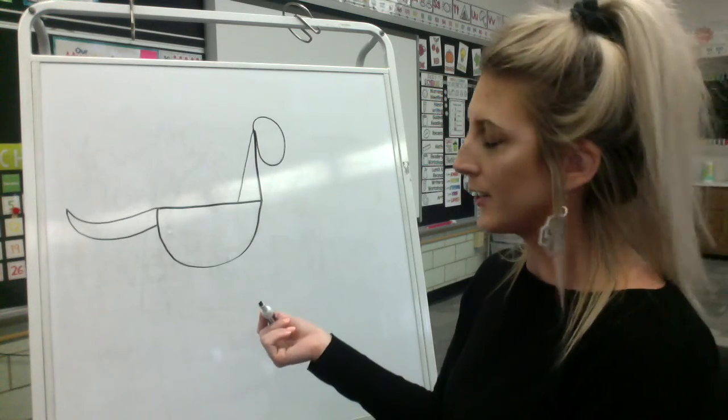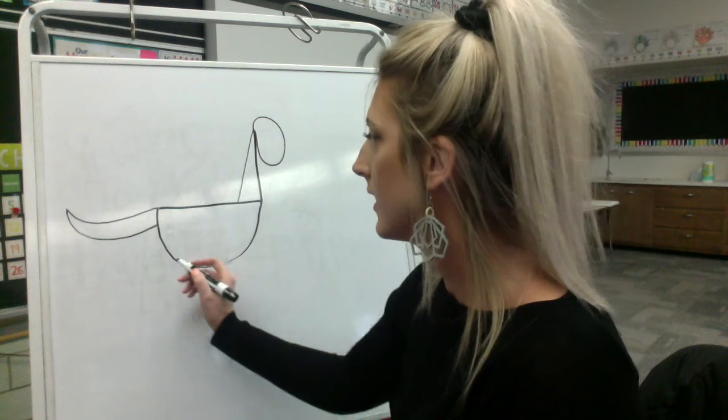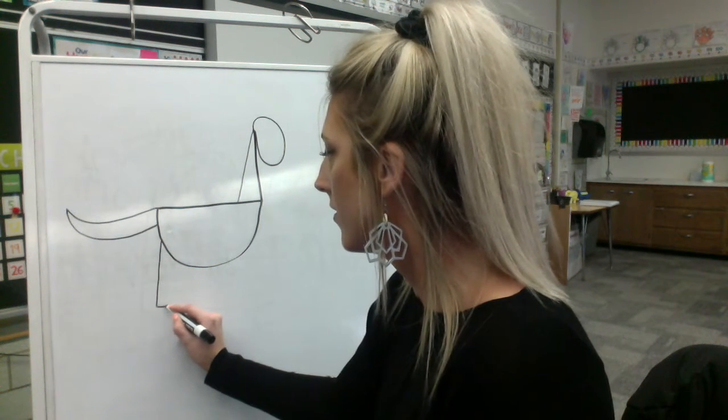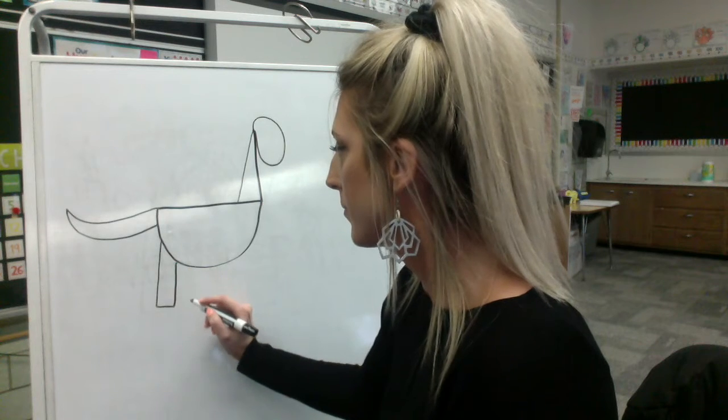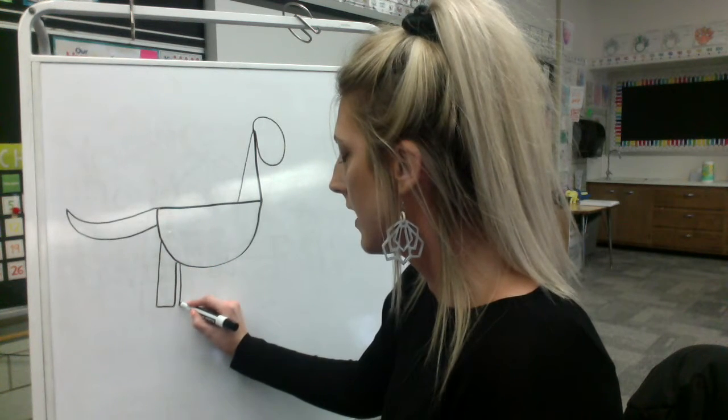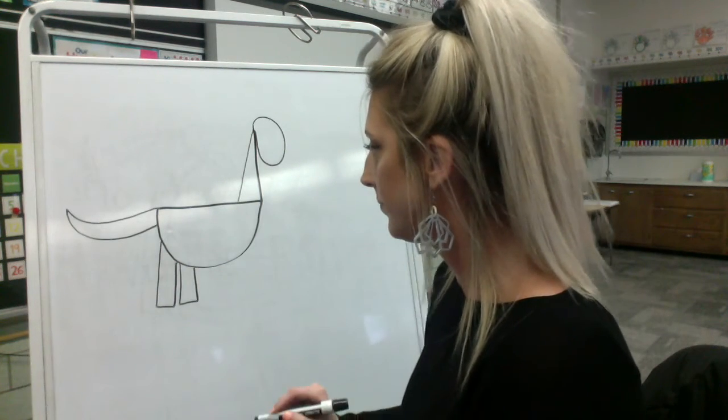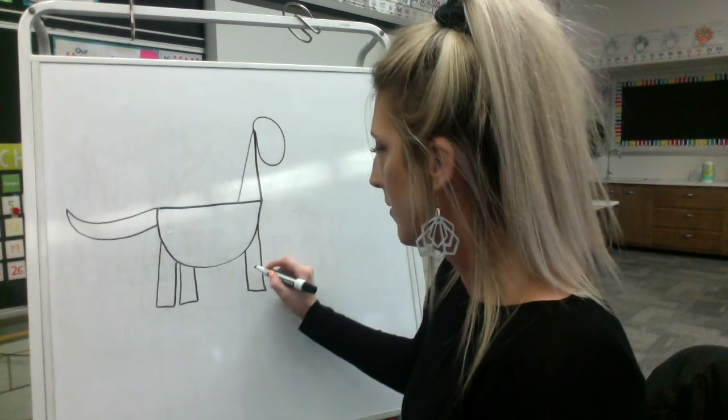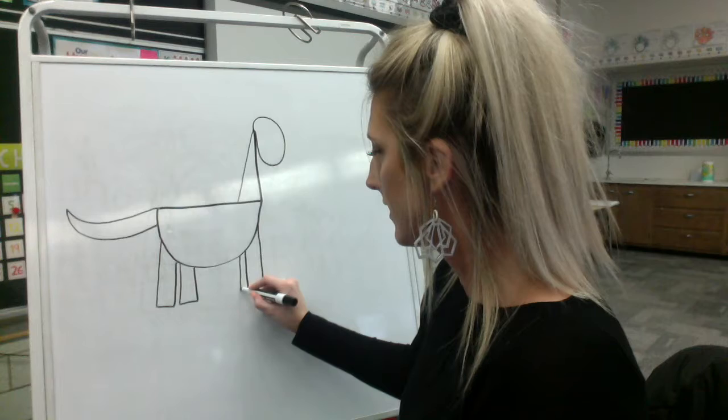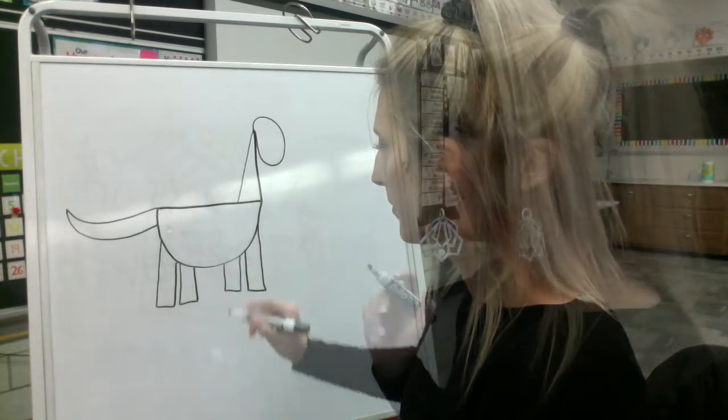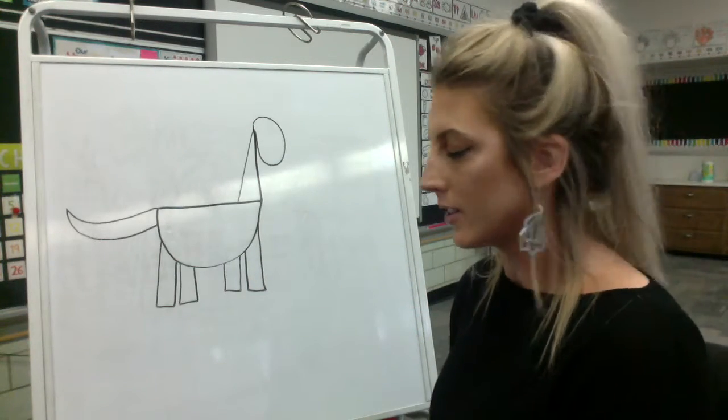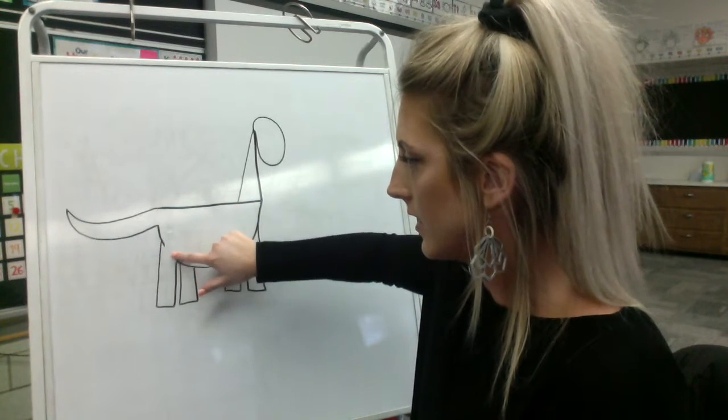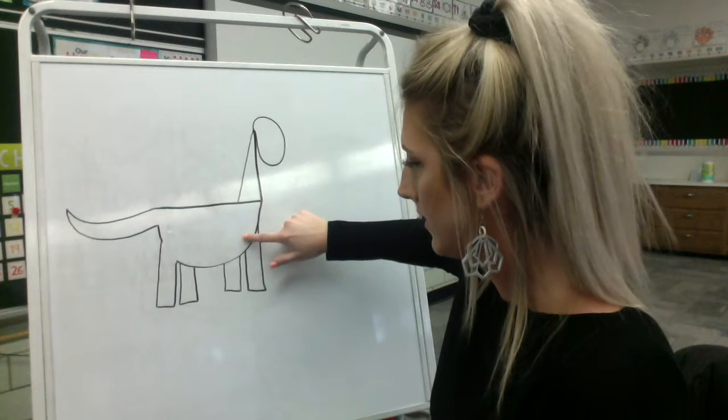I can't have a floating dinosaur, so I need to add legs. So I'm going to do a straight line down, across, up. Straight line down, across, up. Straight line down, across, up. If you have a pencil, here's the part where you can erase some of those lines.